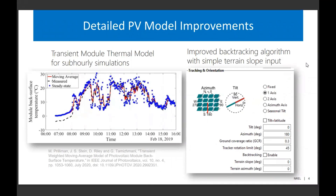We've added a transient thermal model for sub-hourly simulations, so SAM can simulate your PV model down to one minute currently. We used Matt Perlman's model to deal with the thermal impacts. The sub-hourly simulations apply for time steps starting at 20 minutes and below. We've also implemented an improved backtracking algorithm, and with that comes the ability to define at least a single simple slope across the system — no longer assuming flat ground.